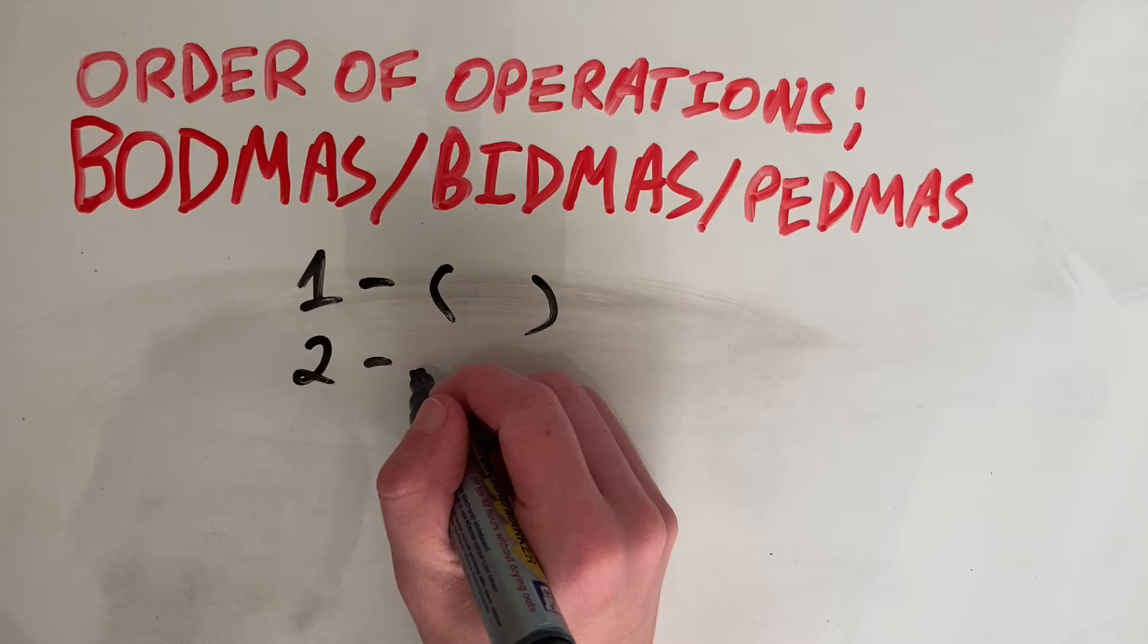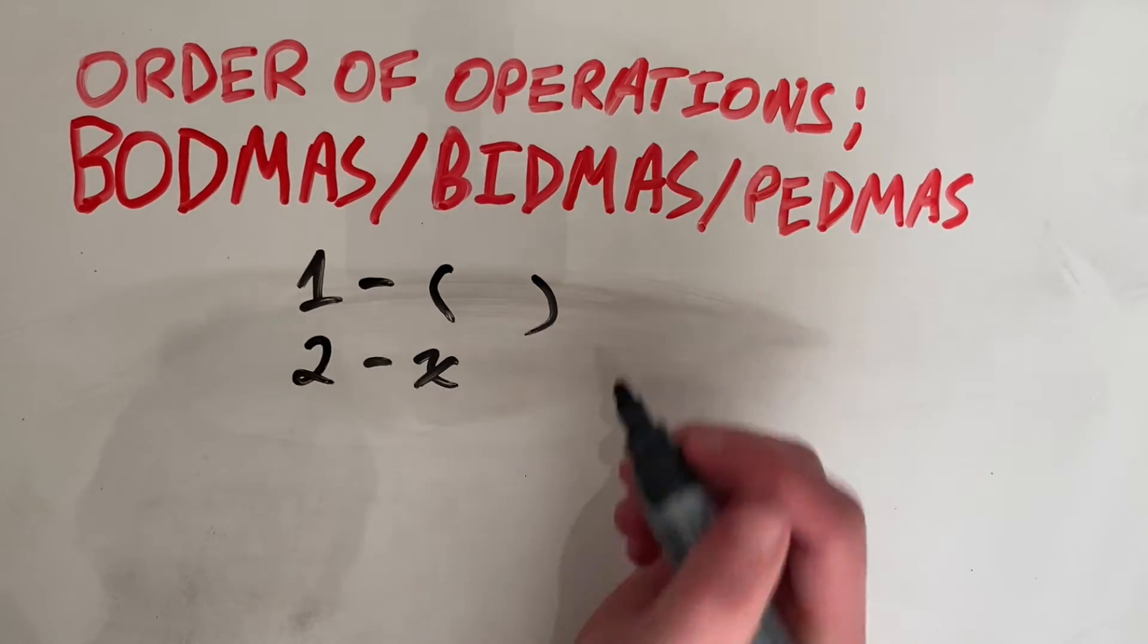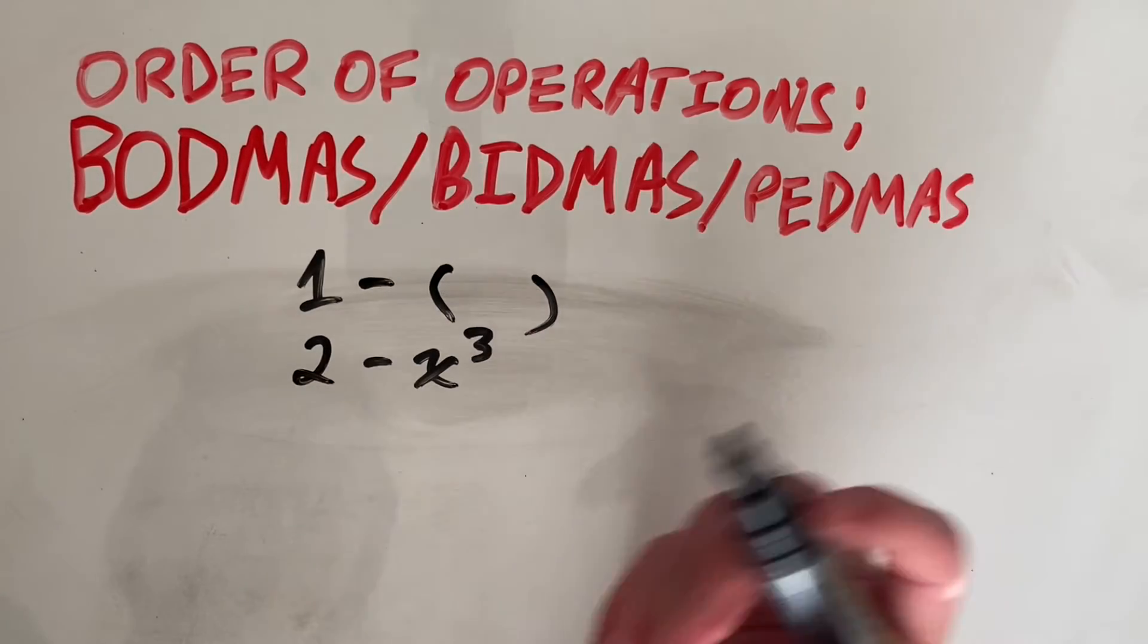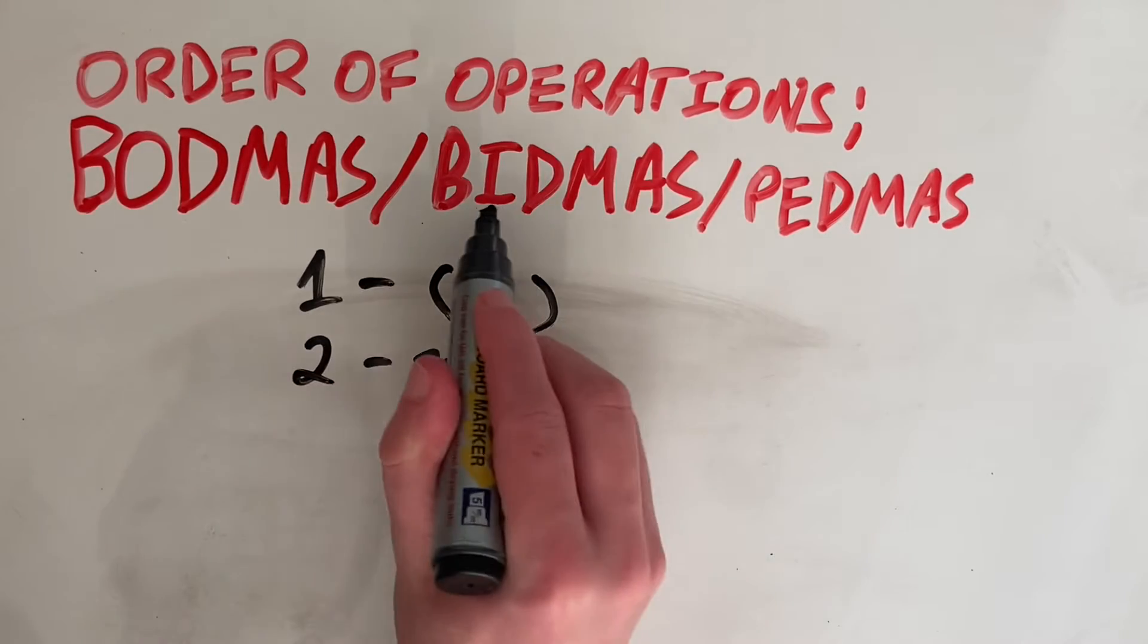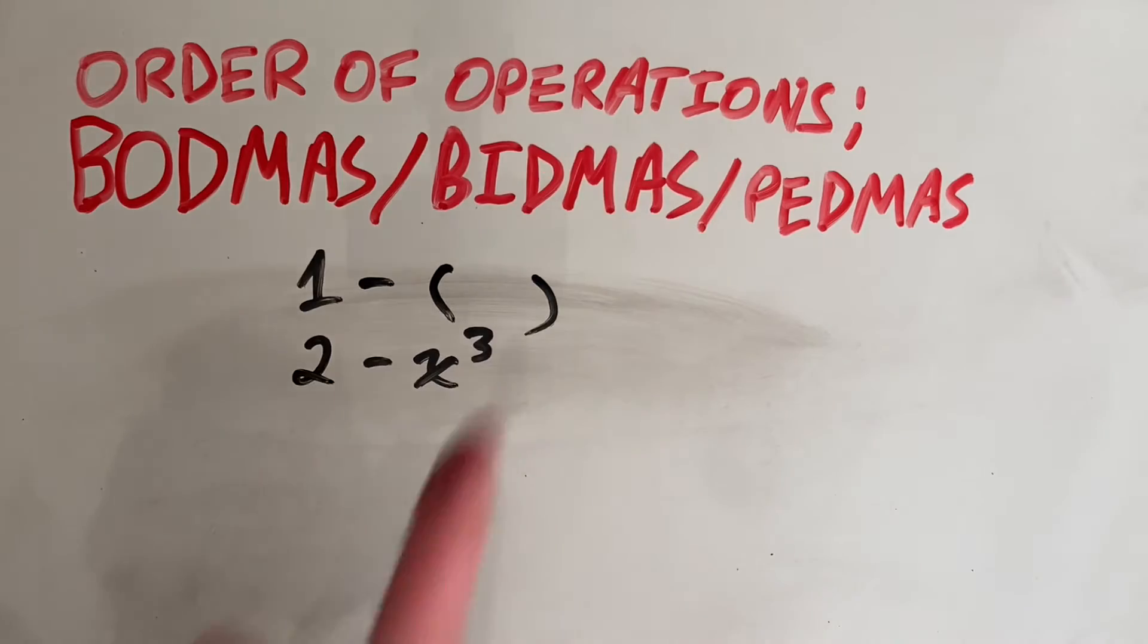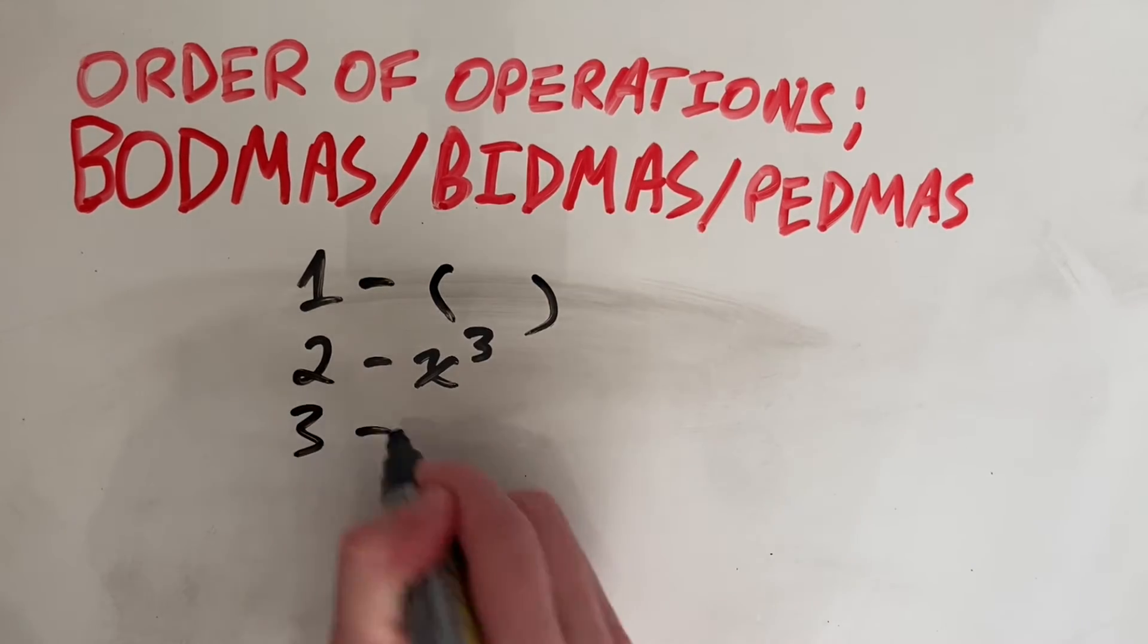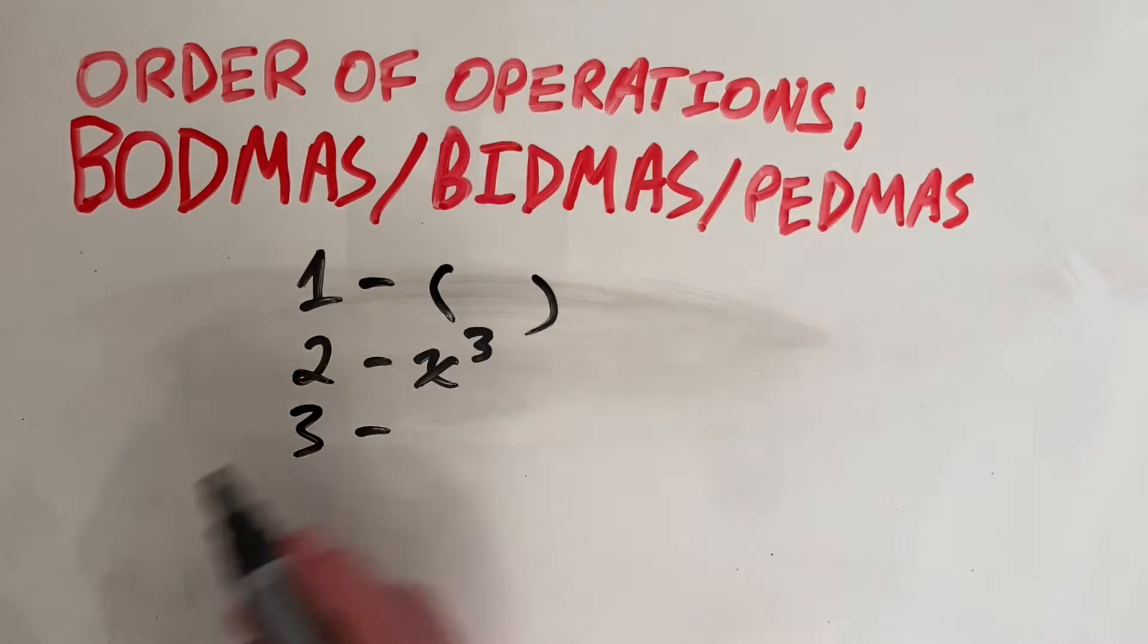So if you have something, I'll just say it's x to the power of 3 or 2 or anything, we do that power, or that order in the exponent, second. And then third, we have D, which is division.